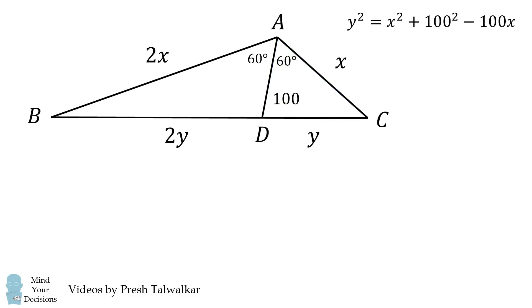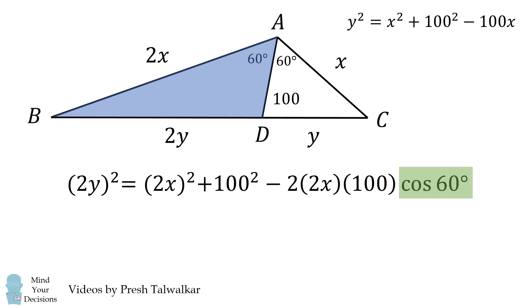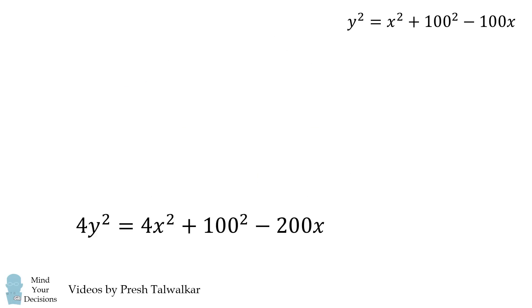And now we'll use Al-Kashi's theorem on this triangle. We again simplify the cosine of 60 degrees, and we get this equation. So we now have two equations.